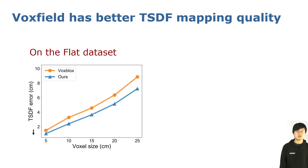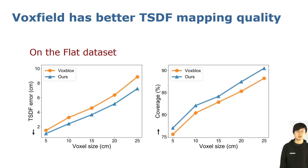Here I show more quantitative results for TSDF mapping. In the left figure, the horizontal axis represents voxel size and we run separate experiments for varying voxel sizes; the vertical axis represents the TSDF error. Our VoxField is in blue and the baseline VoxBlocks is in orange. Our VoxField achieves lower TSDF error consistently thanks to the projective distance correction. In the right figure, our VoxField also achieves improvement on reconstruction coverage, which can also be noticed from the previous video.